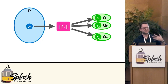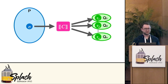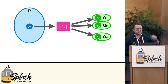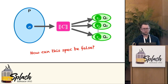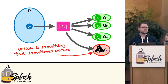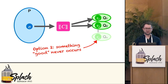Another question is what these disproofs look like more specifically. There are two ways a specification can be false: the first is that something bad sometimes occurs — the type of bugs incorrectness logic also deals with. But there's another way it can be false: one of the good outcomes never occurs. You can prove this with outcome logic, but it's not possible to prove it with incorrectness logic.